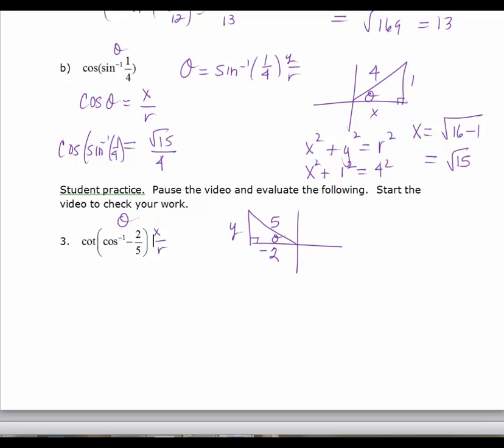So I know that negative 2 squared plus y squared equals 5 squared. y is going to equal the square root of 25 minus 4.